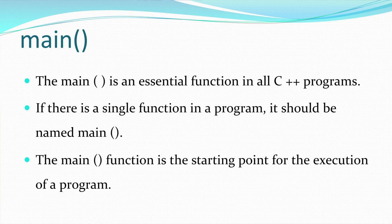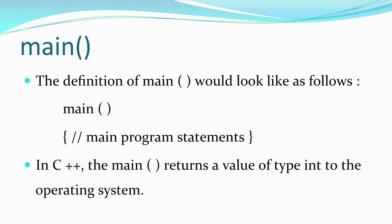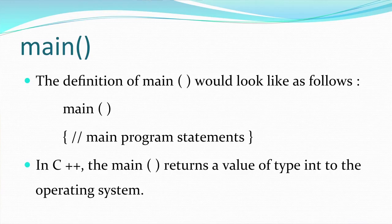The main function has to be present in all C++ programs — it is where program execution starts. If there is a single function in a program, it has to be the main function; if there are multiple functions, one of them must be the main function. By default, the main function returns an integer value to the operating system, so you give return 0 as the last statement. If you declare it as void main, you need not provide a return statement.